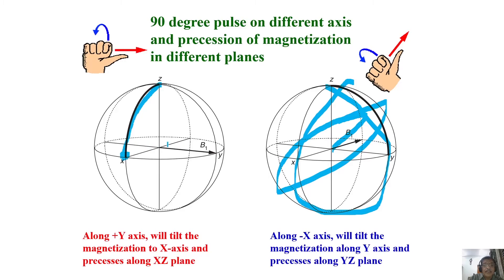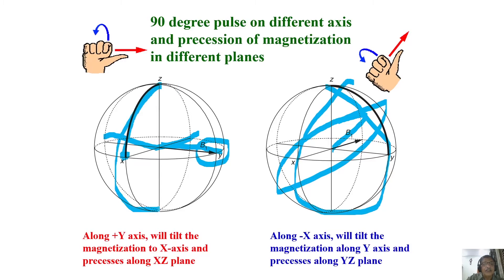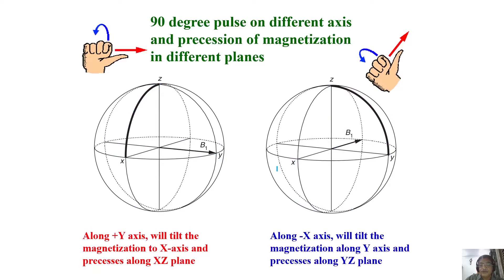The magnetization can be made to take any direction in a three-dimensional sphere. When you represent this on a sphere, it is called a grapefruit diagram. In the grapefruit diagram, the magnetization can be taken in any plane and made to rotate in any plane by applying a pulse in the appropriate direction.